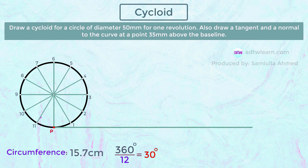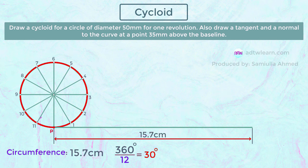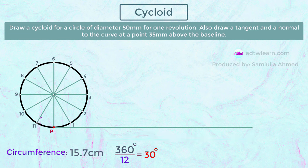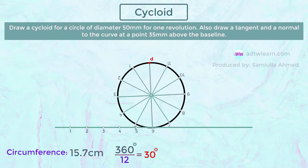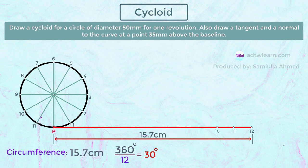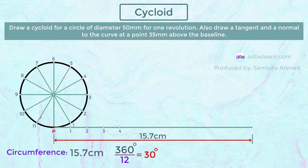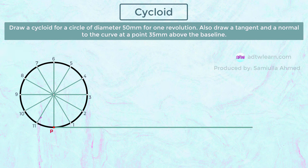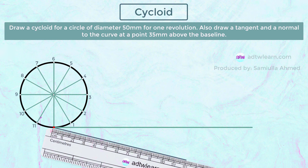This line will be our baseline, whose length is equal to the circumference of the circle — pi times d. As the circle rolls over this baseline all the points will come on this line at equal distance, so we need to divide this baseline into 12 equal parts. We can either divide 15.7 centimeters into 12 parts, or use the engineering drawing method: draw a line at an angle and cut it into 12 equal parts.